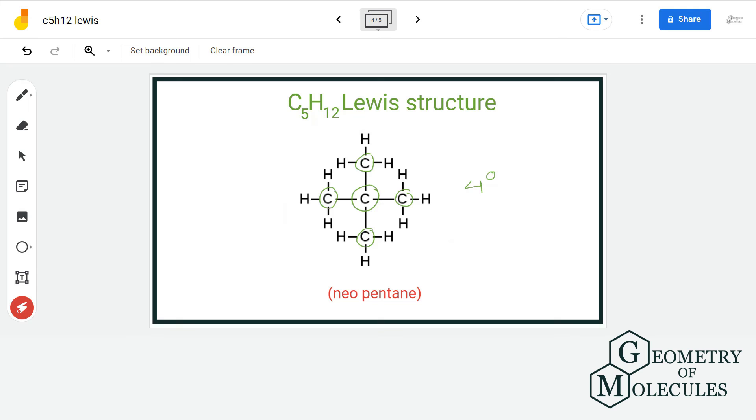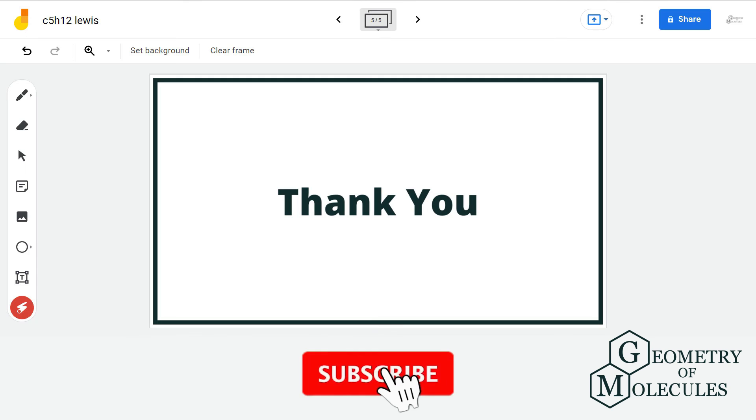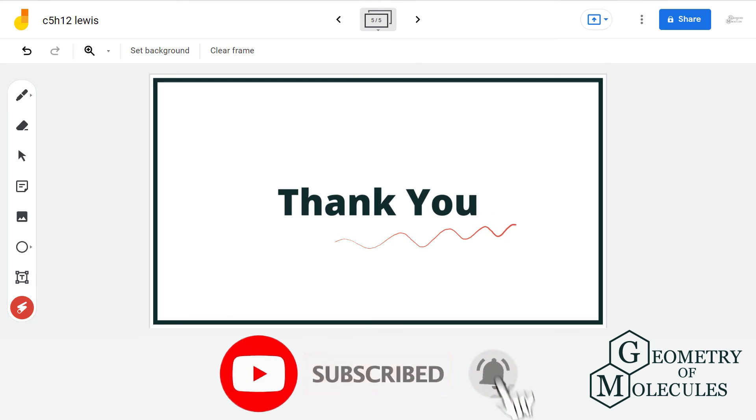So, these were the three Lewis structures having formula C5H12. For more such videos make sure to subscribe our channel and thank you for watching.